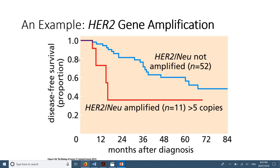On the y-axis is survival rate as a probability — 80%, 60%, 40%, 20% — and on the x-axis are months after diagnosis. As you can see, patients with more than five copies of the gene showed a much lower survival rate compared to those that didn't. This suggests the cancer could be due to over-amplification of this gene, as patients showing high amplification died very early on.